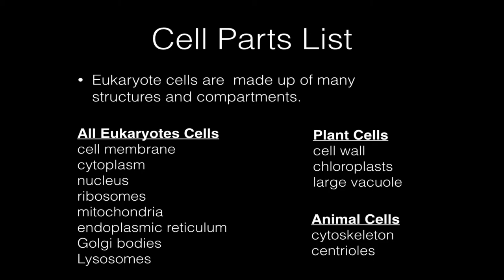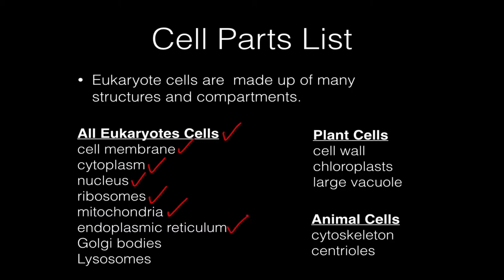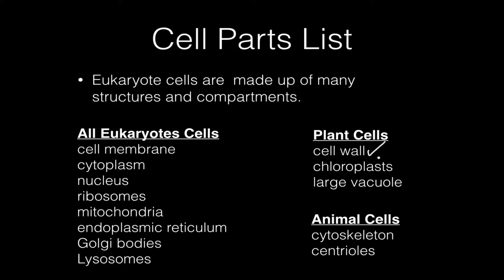If we were going to make a list of all the parts you're going to need to know for the next test, they're right here on this slide. Eukaryote cells are more complex than prokaryotes, and the reason is they contain all these structures and compartments. All eukaryote cells — plants, animals, and fungi — have a cell membrane, cytoplasm, nucleus, and ribosomes, which we've already talked about. We're going to add to this list: mitochondria, the endoplasmic reticulum (otherwise known as the ER), Golgi bodies, and lysosomes.